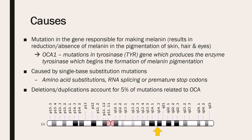Albinism is caused by a mutation in the gene responsible for producing the proteins that make melanin, resulting in a reduction or absence of melanin in the pigmentation of the skin, hair, and eyes. Specifically for OCA1, oculocutaneous albinism type 1, it results from a mutation in the tyrosinase gene on chromosome 14, which produces the enzyme tyrosinase, which begins the formation of melanin pigmentation.